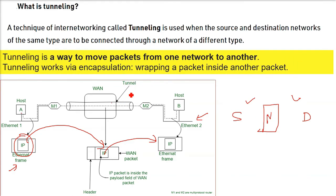So tunneling is a way to move packets from one network to another, and tunneling works via encapsulation. That is, wrapping a packet inside another packet. In the WAN packet, you are actually wrapping or encapsulating the IP packet and then you are transferring.